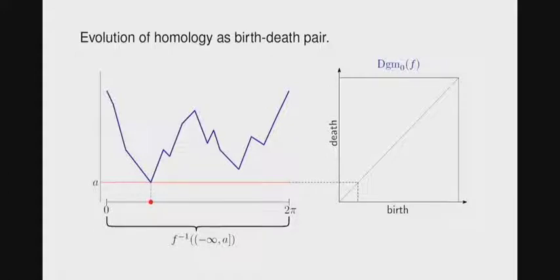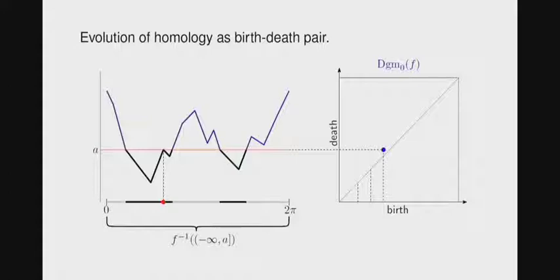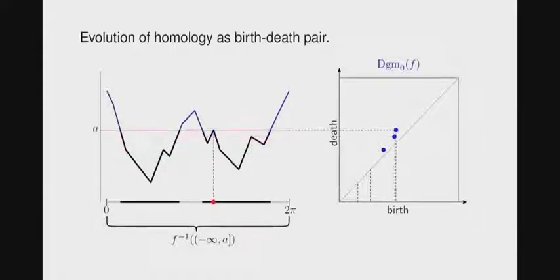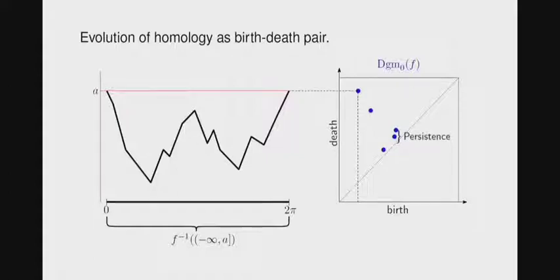You have water rising. At this point, one point forms. That's called a birth. You go a little bit higher, another point forms. Another point forms. Then when you go a little bit higher, these two got merged. The story is the one that was born earlier dies in that merger. People call it the elder rule. If you follow this through, this function gets turned into that picture, which is just telling you when a component was formed or born and when it dies. This is another summary of that function.